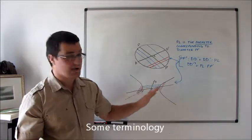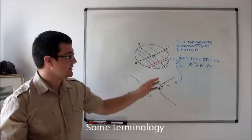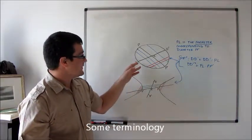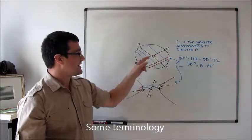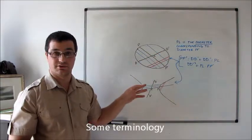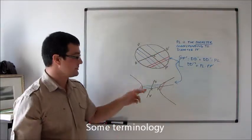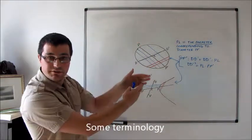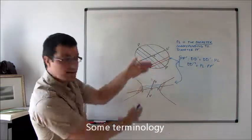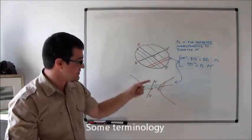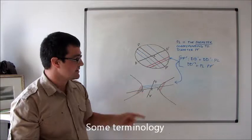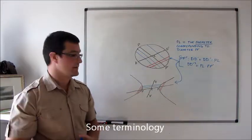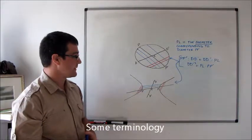Something I also need to mention is that the finite section of DD' — so not the whole conjugate diameter, but just the segment between D and D' — is called the secondary diameter.